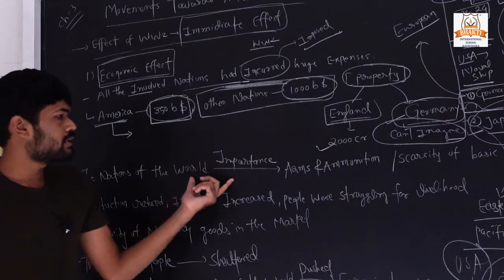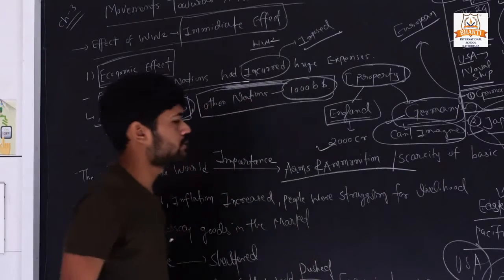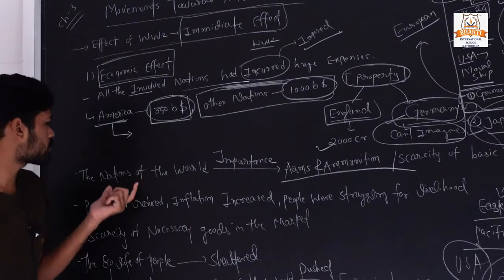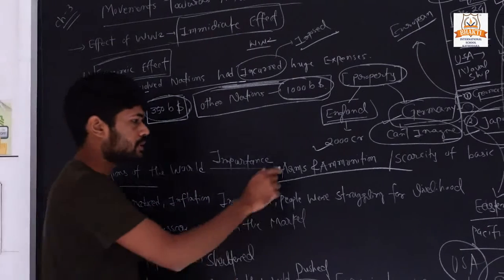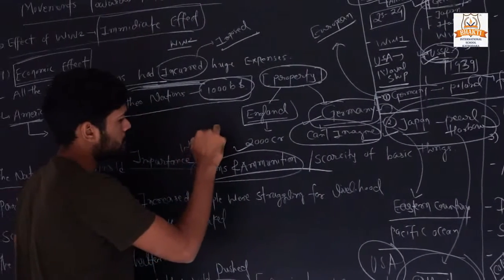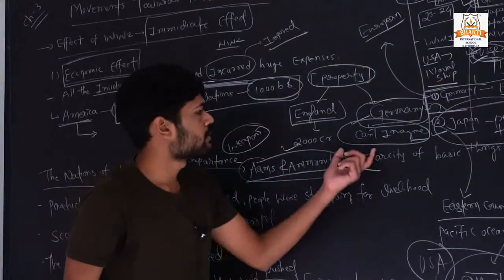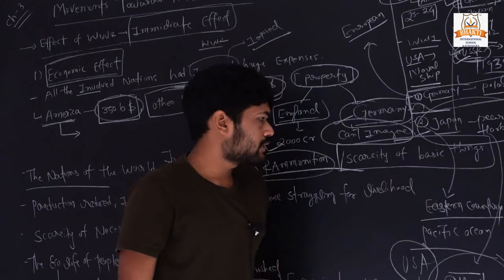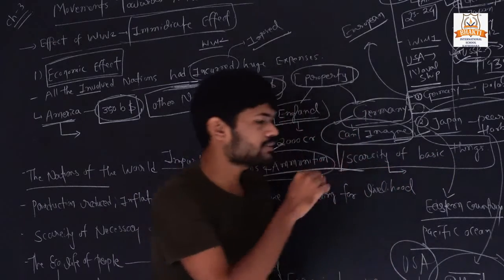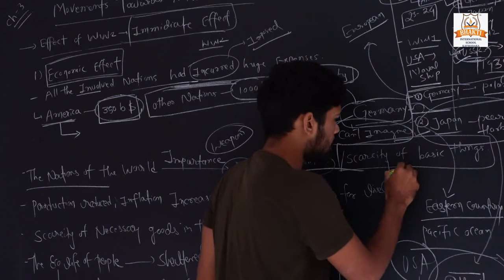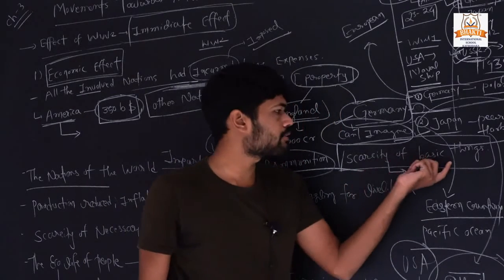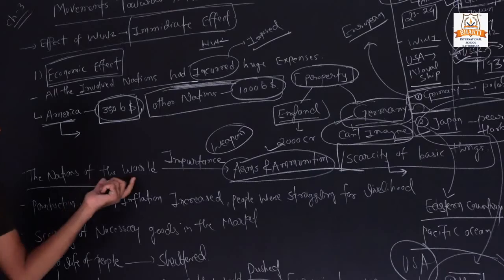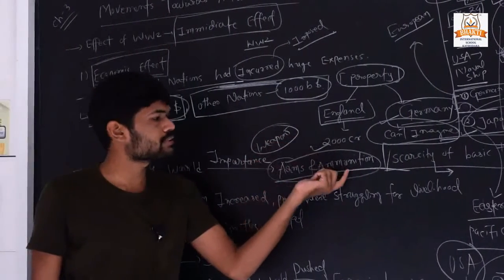The nations of the world now gave importance to arms and ammunition. After World War 1 and World War 2, most nations gave importance to the production of weapons. That is why there was a scarcity of basic things — the production of daily consumption goods was reduced, and the world's focus shifted to arms and ammunition, meaning the weaponization of their own countries.